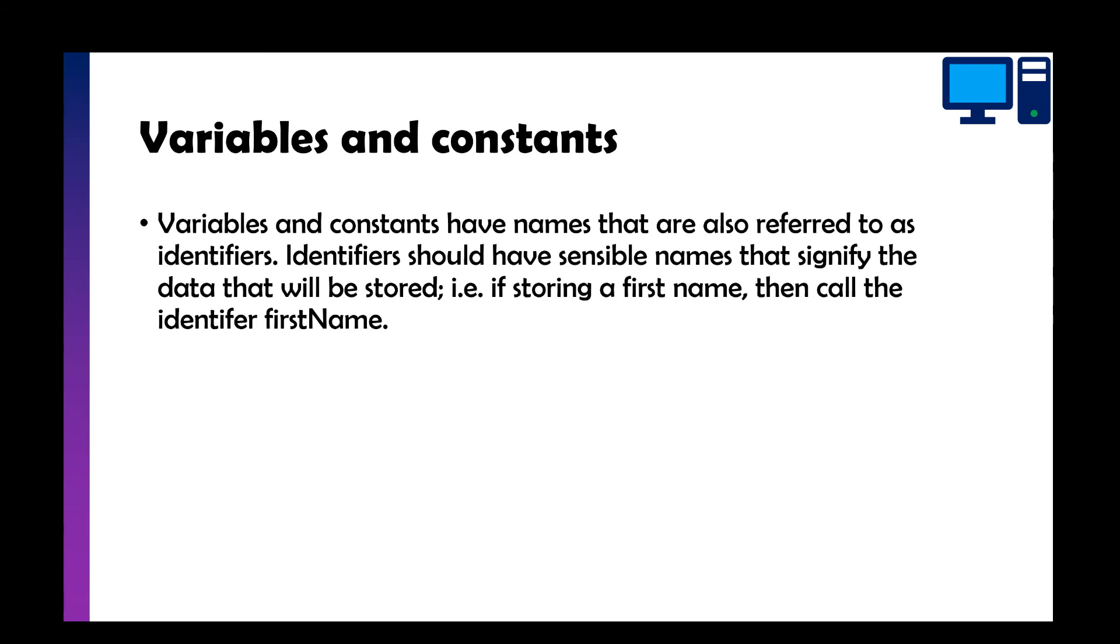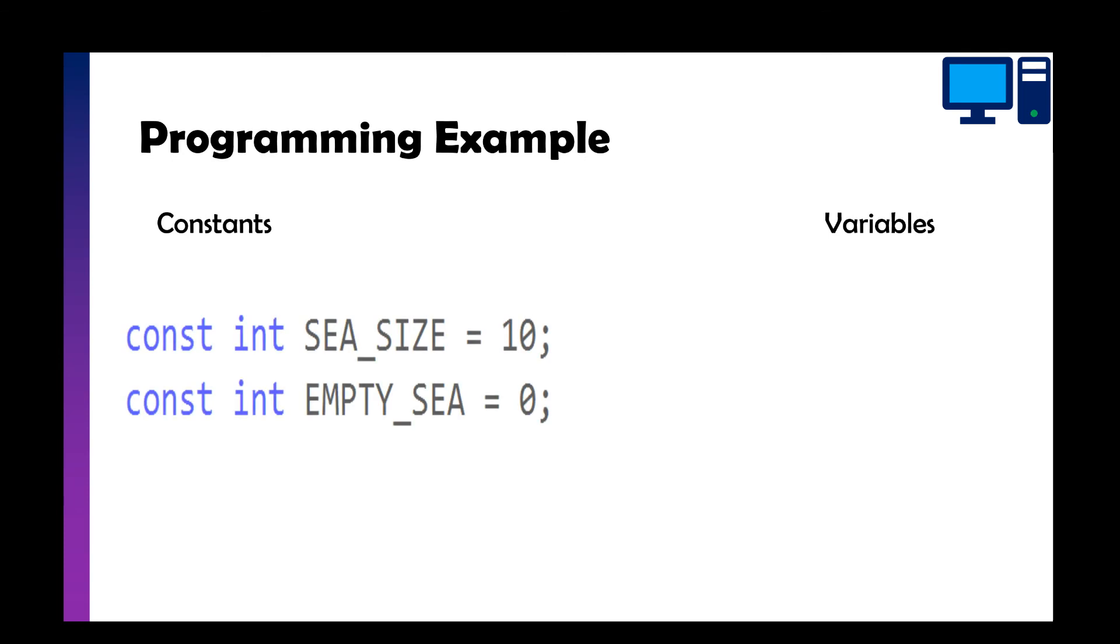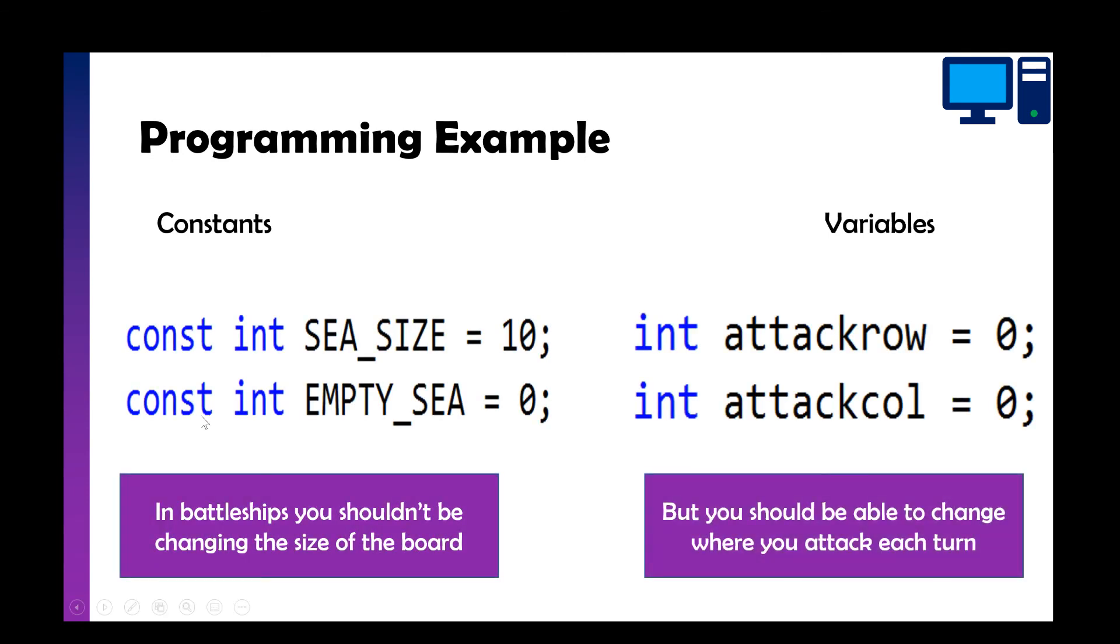Now variables and constants all have special names that are referred to as identifiers. Now these are made by the programmer, so the person solving the problem creates these names. So they should be sensible and they should signify the data that will be stored. So if you're storing someone's first name then you call the identifier first name. So here's an example, this is from a game of battleships. So I've got two constants, one's called C_SIZE and one called EMPTY_SEA. Now what we're doing, we create a variable, so this is the assignment, so we've assigned the value of 10 to the constant, so equals 10 is the assignment. C_SIZE that is the identifier, int is the data type, and const means a constant. Now the C_SIZE would be how big the board is, so it's a 10 by 10 grid, so we shouldn't be changing the size of the board during the game.